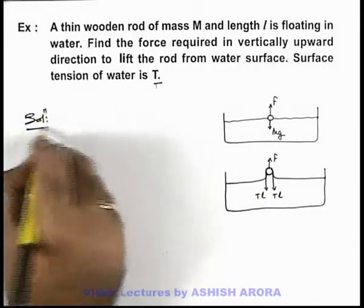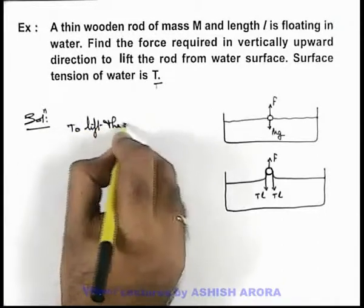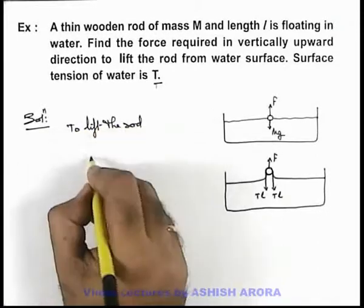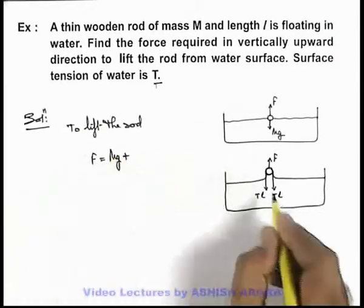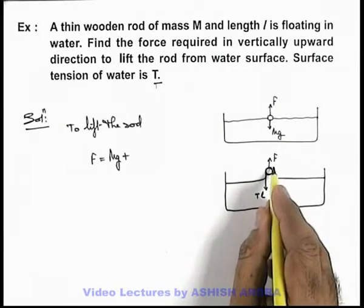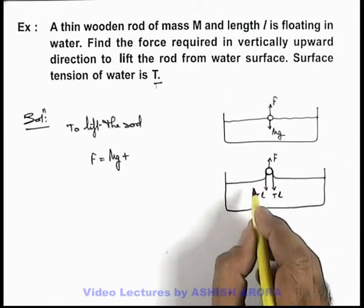So in solution we can write, to lift the rod we need to apply the force which is Mg plus the total force of surface tension also we need to balance which is acting in downward direction as the rod will have a tendency to move up.